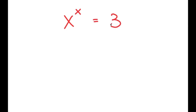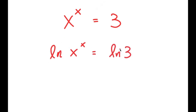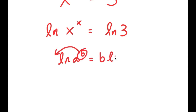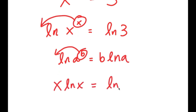In this video, I'm going to solve the equation x to the power of x is equal to 3. To solve this, I'm going to first start by taking the ln or natural log on both sides. So I get ln of x to the power of x is equal to ln of 3. Using the property that ln of a to the power of b equals b times ln a, I can move x to the front. So I get x times ln x is equal to ln 3.